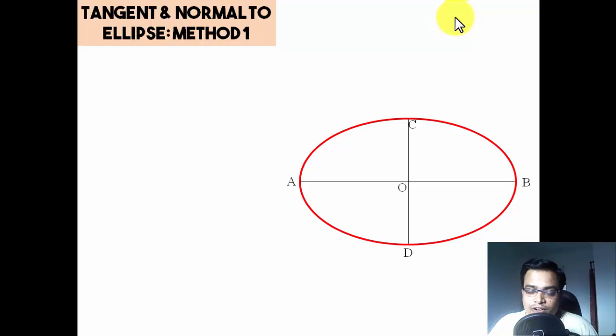Now let's make a point over here on the ellipse and let's say the name of this point is P. What I'm going to do is place one leg of your compass here at O, other leg at A, and then make a quarter circle in the clockwise direction.